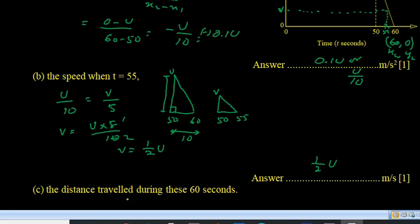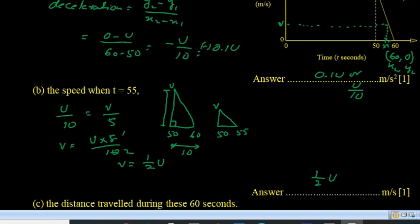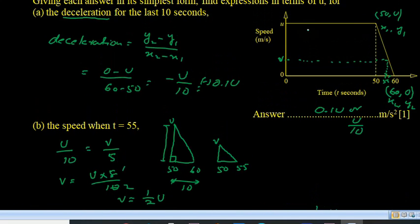And part c, the distance traveled during these 60 seconds. So 60 seconds is basically a trapezium. In speed-time graph, the area of the figure is the total distance.